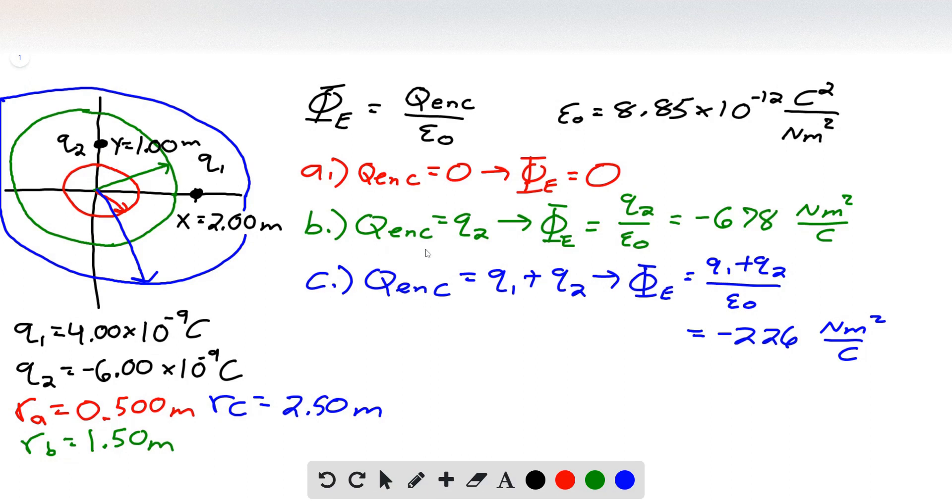In part B, the total enclosed charge, well, this is a radius of 1.5 meters, so that includes our Q2 charge, because one meter is included in the radius of 1.5, but it doesn't include Q1. So the total enclosed charge is just Q2, which is negative 6 nanocoulombs. Nano is 10 to the negative 9, so it's negative 6.0 times 10 to the negative 9 coulombs. So I plug that in for the total enclosed charge, Q2, divided by epsilon naught, and when we plug the numbers in the calculator, we get negative 678 newton meters squared per coulomb for part B.